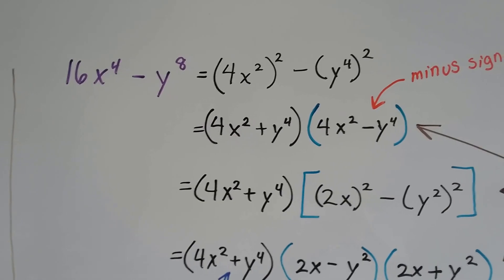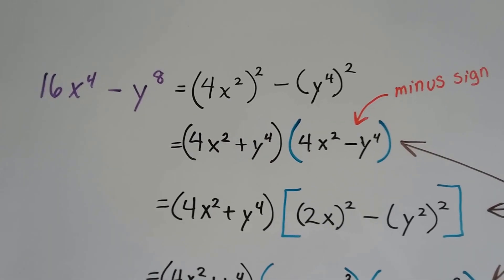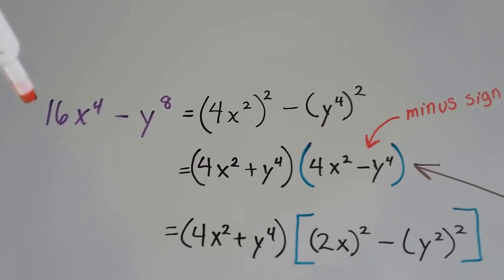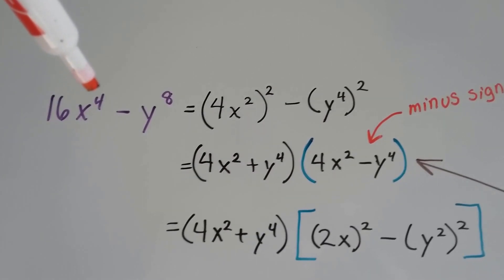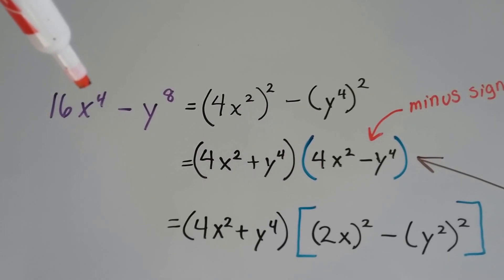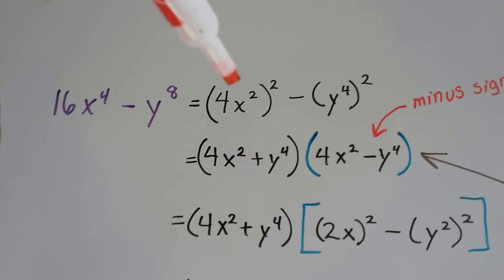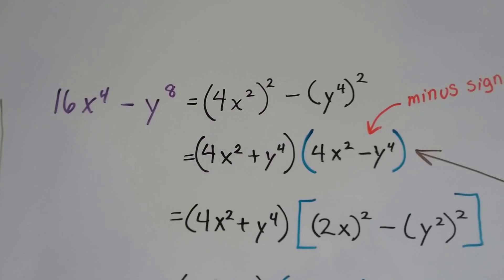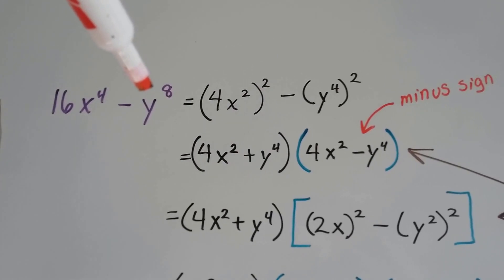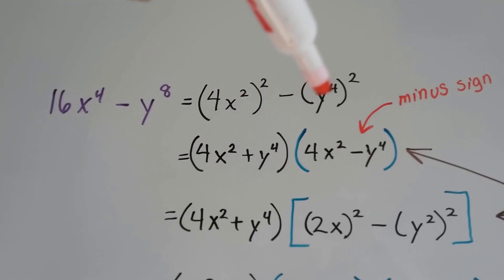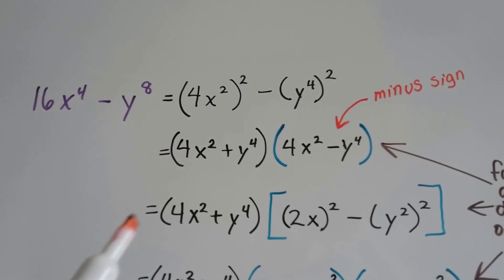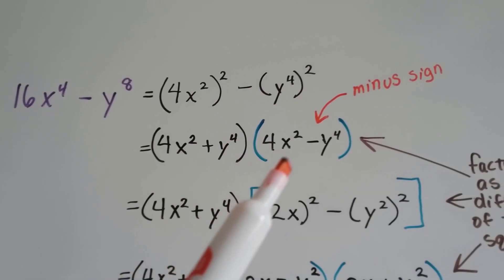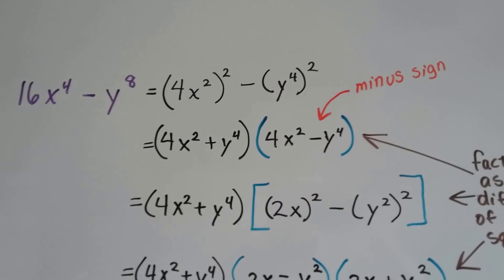Now we've got 16x to the 4th power minus y to the 8th. What times what could be 16x to the 4th? 4 times 4 is 16, and because of the product rule of exponents we add the exponents, so we'd have x squared times x squared, because the 2 and the 2 would make a 4. So we've got 4x squared to the 2nd power. And what times what would make y to the 8th? Well, y to the 4th. So we write it as 4x squared plus y to the 4th, times 4x squared minus y to the 4th.